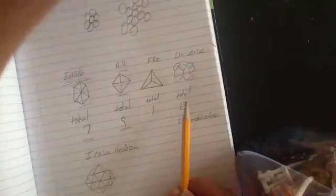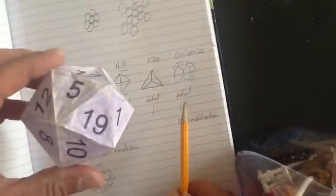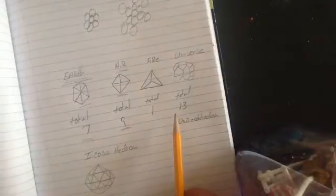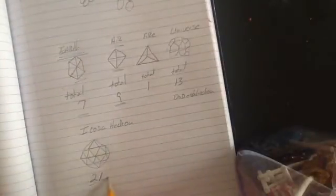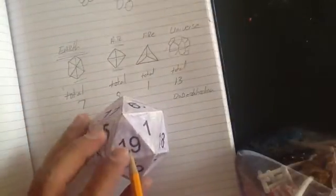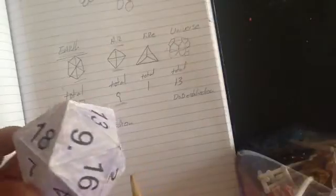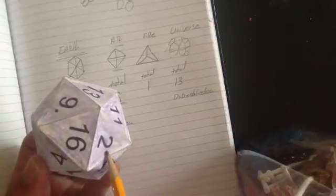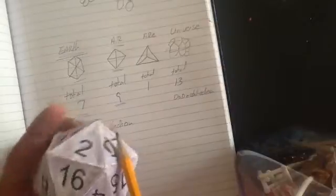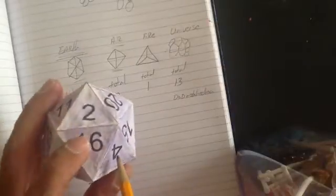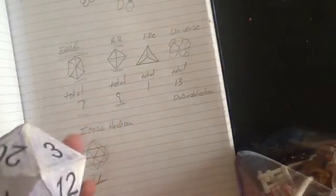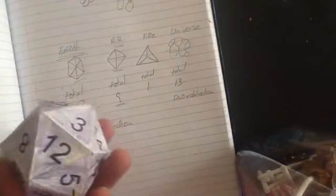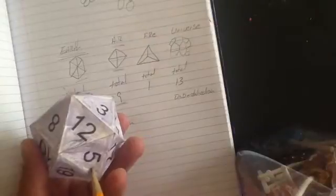The Icosahedron, this one is the Icosahedron, and the total is always 21. So if I look here at 19 and I flip over here to the opposite side, it's two. 19 and two is 21. If I start here and go 16 and if I go to the opposite side, yeah, five. 16 and five is 21.